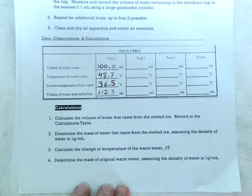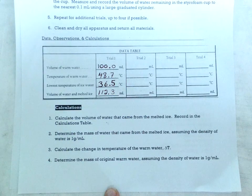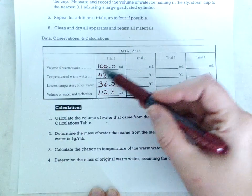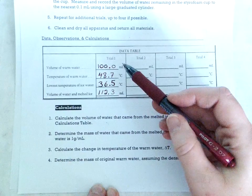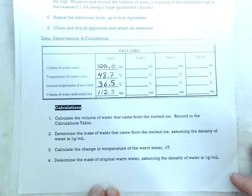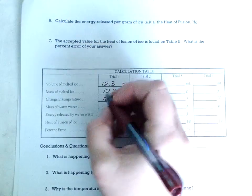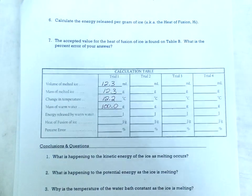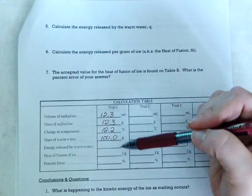Number four says determine the mass of original warm water assuming the density of water is one gram per milliliter. Now if you're following directions your volume of warm water for all four trials should be 100.0 milliliters. So of course that's 100.0 grams.